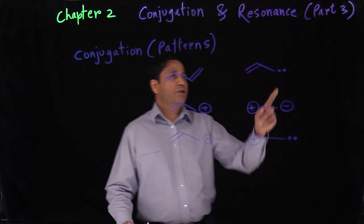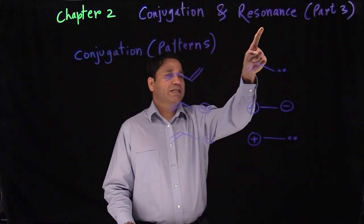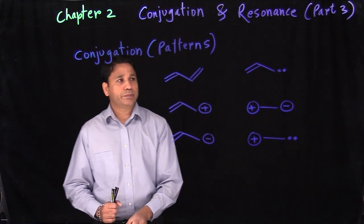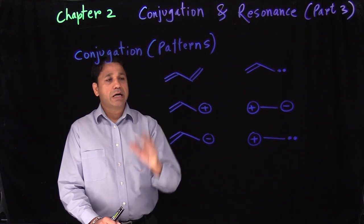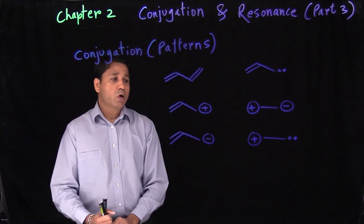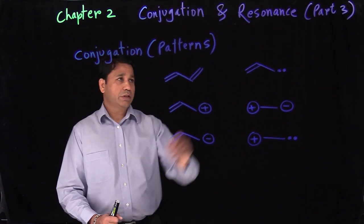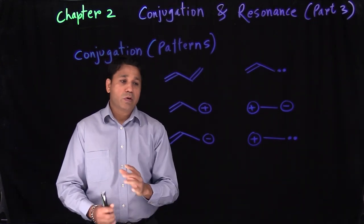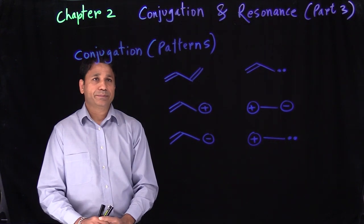The third part of Chapter 2 is Conjugation and Resonance. This is something you probably haven't heard before, and we will go into really detail on this topic. This topic is also important because we are going to be using this special resonance in pretty much all the chapters from now onwards. It's a very important concept and we will learn everything properly here.